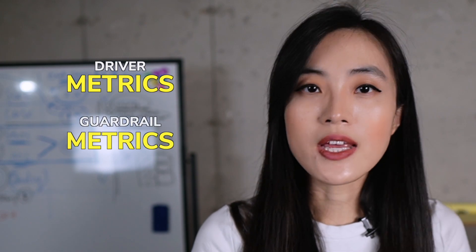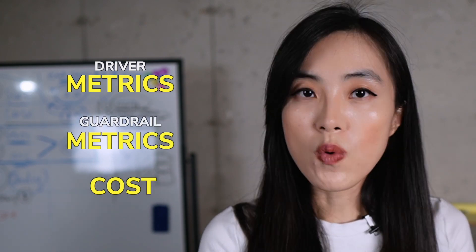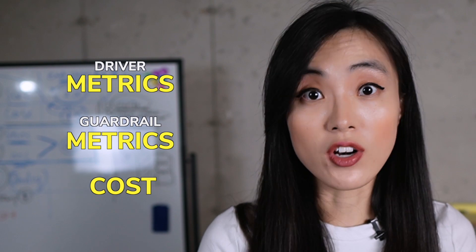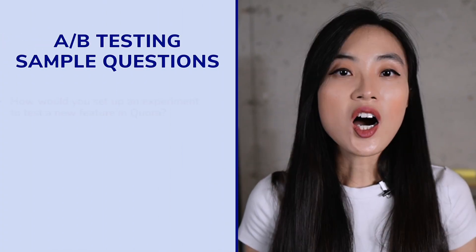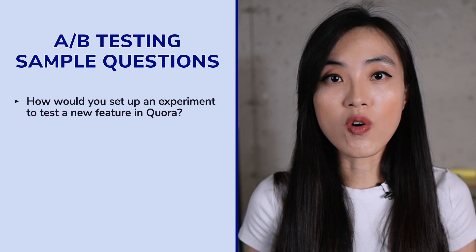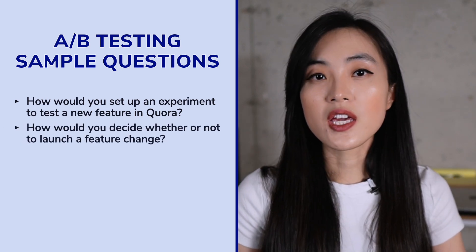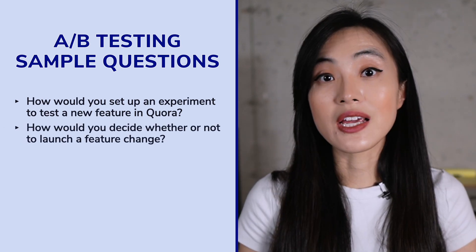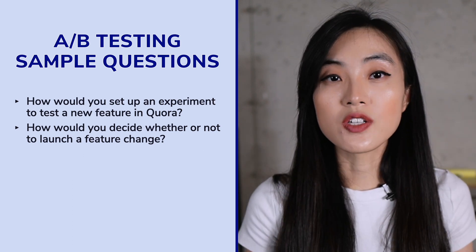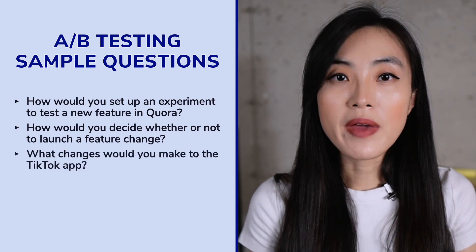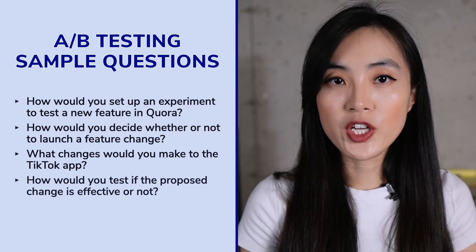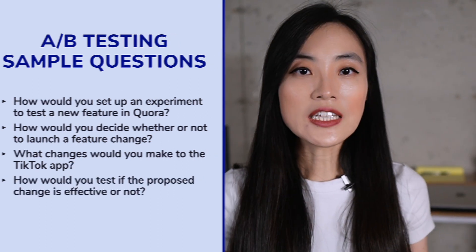This can involve looking at driver metrics, guardrail metrics, and cost to determine whether the proposed change is effective. Here are some example questions: How would you set up an experiment to test a new feature in Quora? If engagement decreased in one segment but increased in others, how will you decide whether or not to launch a feature change? What changes would you make to the TikTok app, and how would you test if the proposed change is effective?